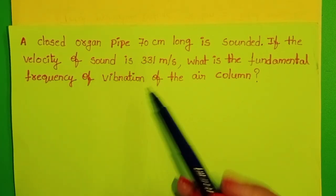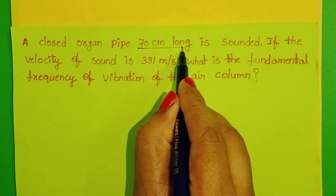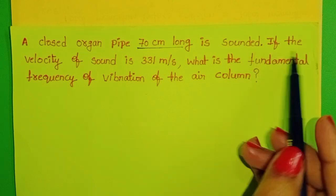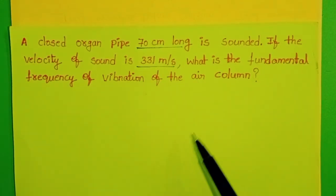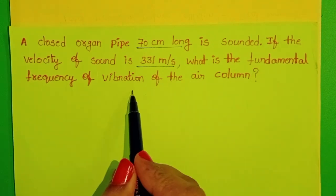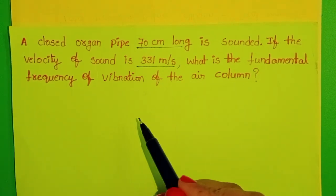A closed organ pipe 70 cm long is sounded. If the velocity of sound is 331 m per second, what is the fundamental frequency of vibration of the air column?